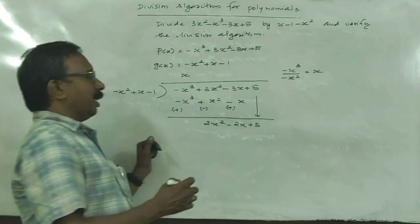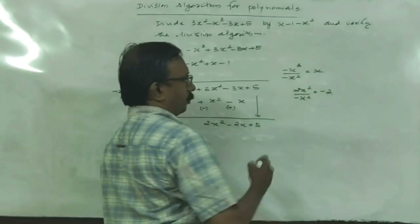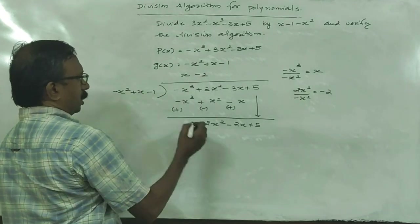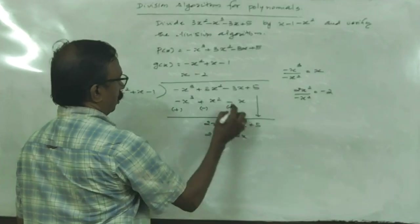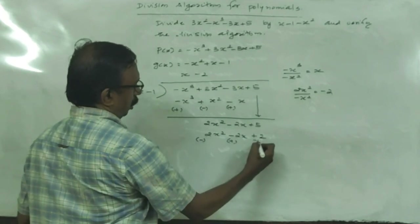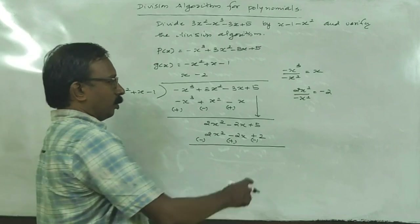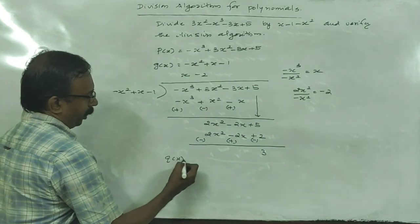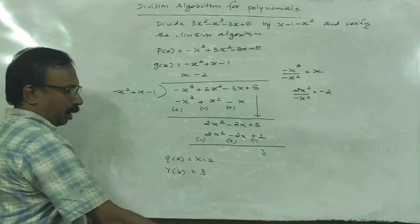The next term is 2x² divided by -x², which is -2. Then -2 times -x² = +2x², -2 times x = -2x, -2 times -1 = +2. Changing the signs and adding: 2x² - 2x² = 0, -x + x = 0, 5 - 2 = 3. So the quotient q(x) = x - 2 and the remainder r(x) = 3.